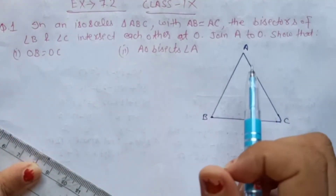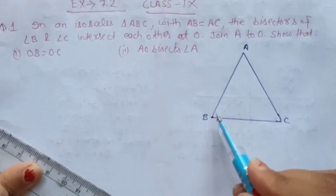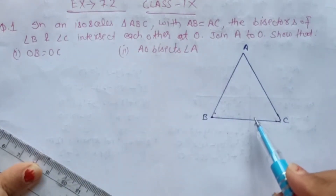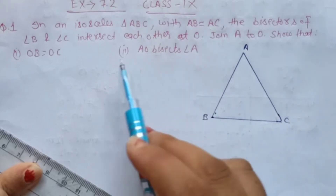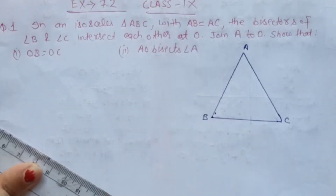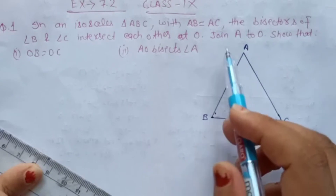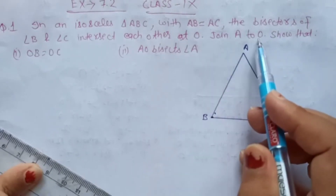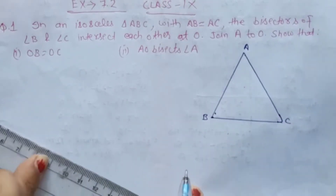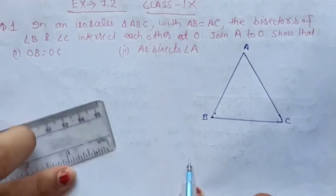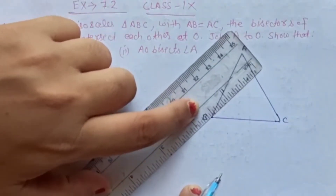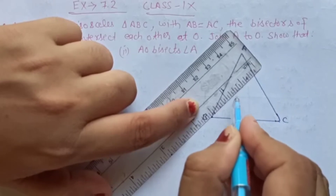Next, the bisector of angle B and angle C. Angle ABC aur angle ACB, in dono ka hume bisector banana hai jo intersect karega at O. Jo O par intersect karega. Bisector hoga to do equal parts mein divide karega angle B aur C ko.